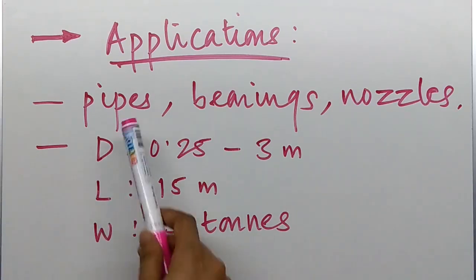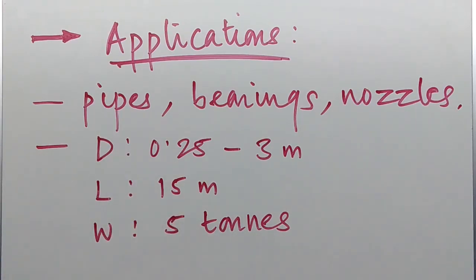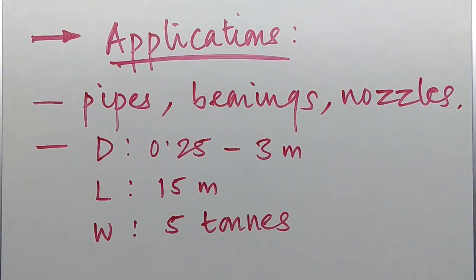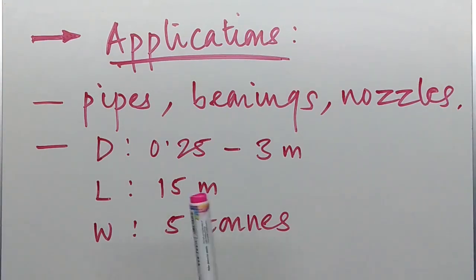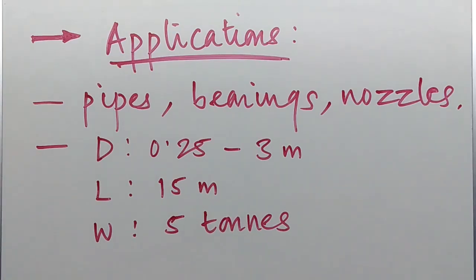This process is generally used to produce hollow components such as pipes, bearings, nozzles, and engine liners. Parts with diameters in the range of 0.25 to 3 meters can be produced, with lengths up to 15 meters and weights up to 5 tons.